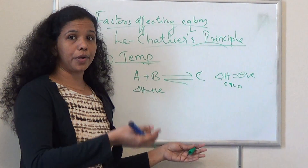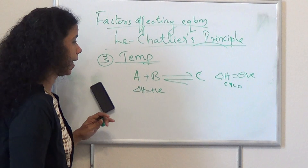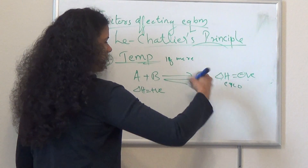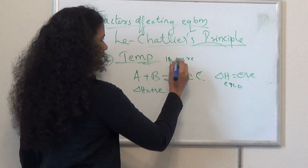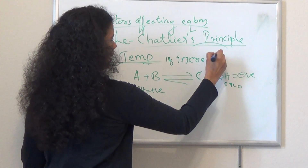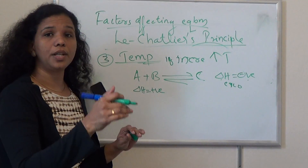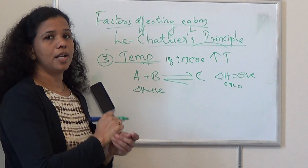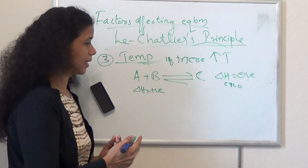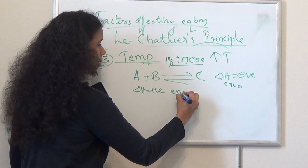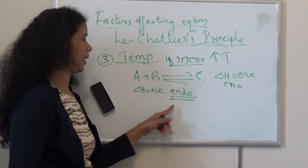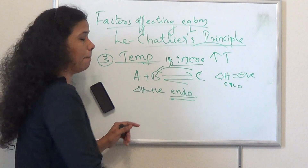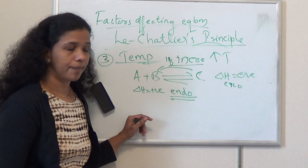Since the forward reaction is exothermic, it is releasing heat. Now, if we increase temperature — we are supplying temperature from outside — the system wants to decrease the temperature. It will proceed in a direction which will consume heat. That means if we increase temperature, the reaction that takes place will use that heat, which is the endothermic reaction.